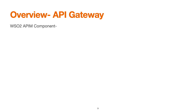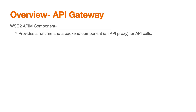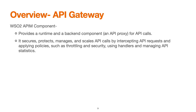API Gateway is a WSO2 API Manager component that provides a runtime and a backend component and API proxy for API calls. It secures, protects, manages and handles API calls by intercepting the API request and applies policies such as throttling and security using handlers, and manages the API statistics.